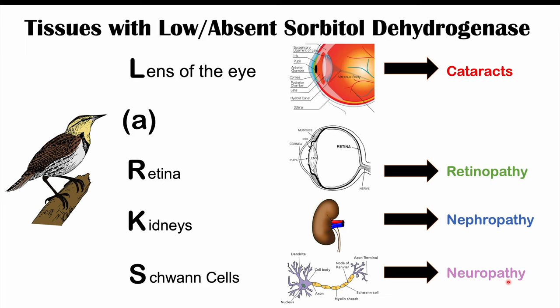Those are the highlights of the sorbitol pathway and the health consequences of high glucose activating aldose reductase in tissues lacking sorbitol dehydrogenase. I hope you found this lesson helpful — please like and subscribe for more lessons like this one. Thanks for watching, and I hope to see you next time.